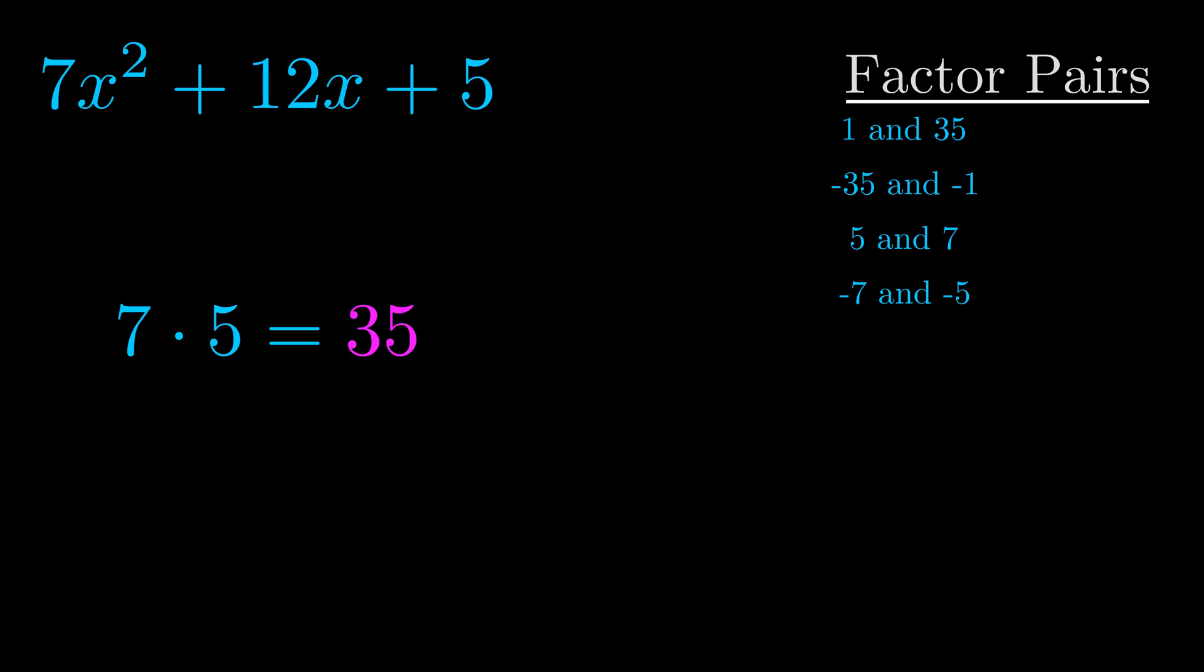The b value is the coefficient on the x term. That's the middle term, the one that we haven't done anything with yet. And really this is the only factor pair that we need.